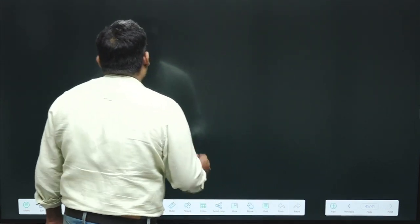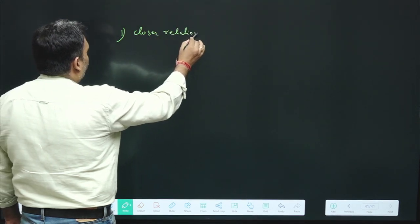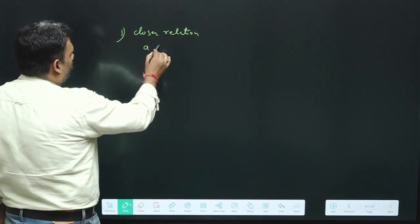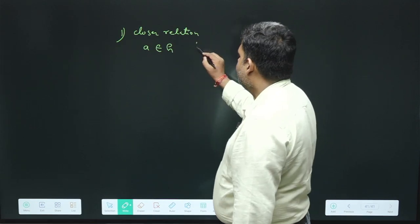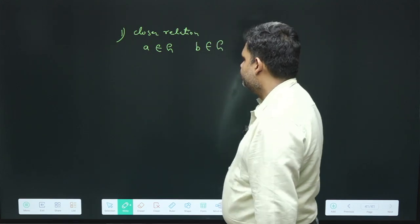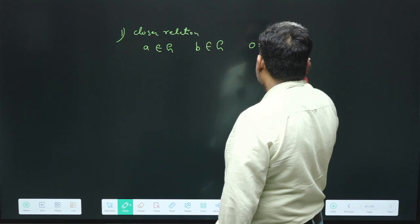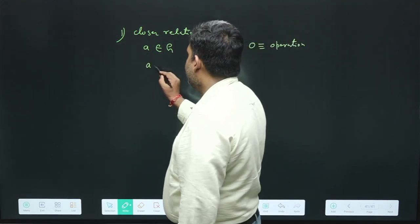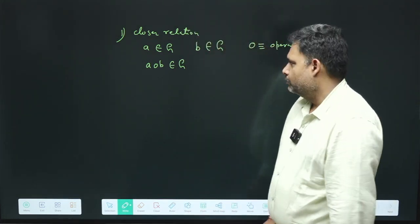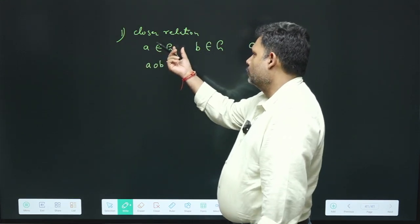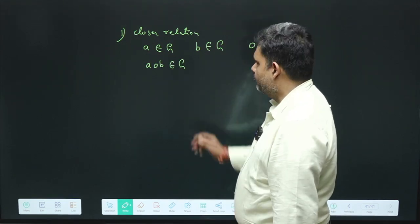The first property is the closure relation. If A is an element that belongs to group G, and B is also an element that belongs to group G, and we have defined some operation O, then A operation B also belongs to the same group G. This is known as the closure relation. Simply put: if A belongs to a group and B belongs to the same group, performing the operation on A and B gives a result that also belongs to that same group.